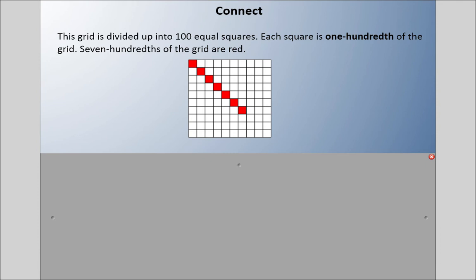I have this grid here and it's divided up into 100 equal squares. Each square is one-hundredth of the grid. Seven-hundredths of this grid are currently red. In other words, one whole being this whole grid is divided into 100 pieces, so one out of 100, or one-hundredth, is each piece. I have seven colored, so seven-hundredths of the grid are red.